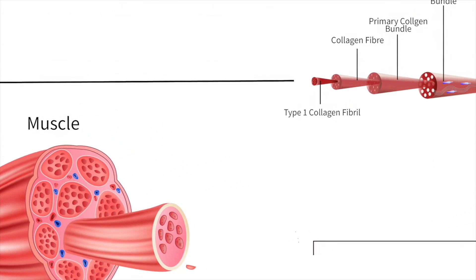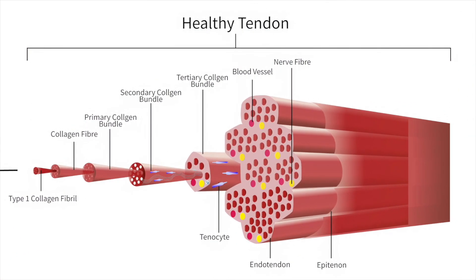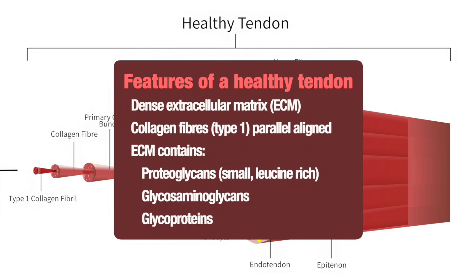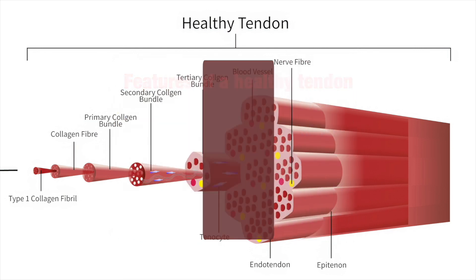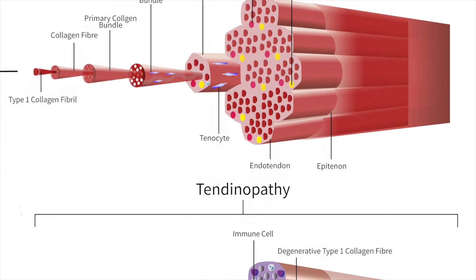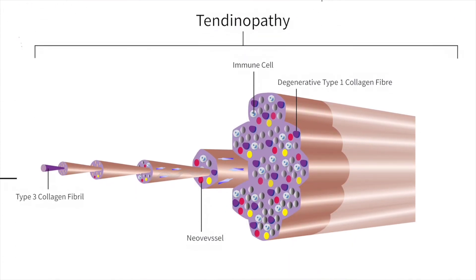To clarify what a normal tendon looks like and what happens during tendinopathy: normal tendon is a well-organized network of collagen fibrils. The extracellular matrix is dense with a fibrillary network of predominantly parallel-aligned collagen fibers, principally consisting of type 1 collagen. The extracellular matrix is composed of proteoglycans, glycosaminoglycans, and glycoproteins, including small leucine-rich proteoglycans. In tendinopathy, tenocytes are decreased in volume, becoming longer and slender, with an increased nucleus-to-cytoplasm ratio, and they produce less extracellular matrix with an increase in type 3 collagen density, mostly owing to less degradation.